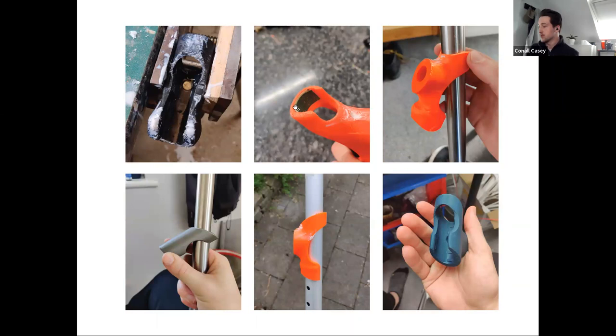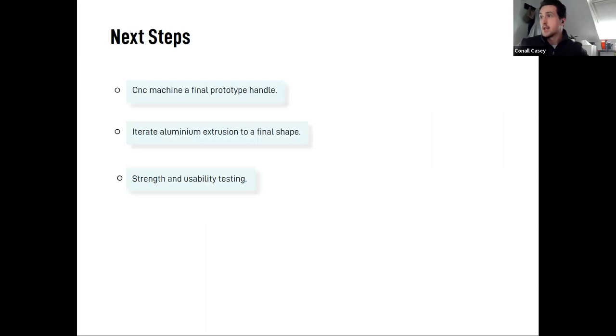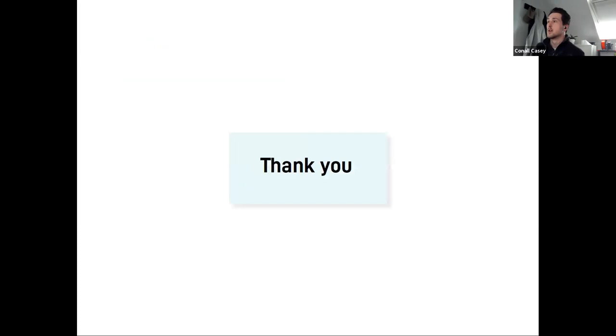Right now I'm on iteration number nine, which I'll be taking to the CNC to mill out hopefully in a few days when the plastic arrives, or starting next week. Next steps: machine the final prototype handle, iterate the extrusions further to determine the final shape, and then move into strength and usability testing. Thank you — happy to take any questions. And we'll give it a few minutes — feel free to write questions in the Q&A box or the chat.